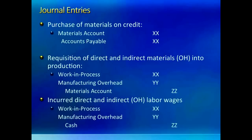Next we need a journal entry to charge direct and indirect labor to the work in process account and to the manufacturing overhead account, just like in the material case above. Labor goes out of the labor or wages payable account — whatever name you want to give it — and into the debit side of work in process if it is direct labor, or into manufacturing overhead if it is indirect labor. So we have another composite entry to transfer all labor costs into the correct places.